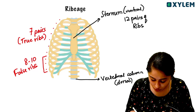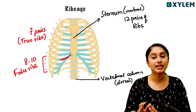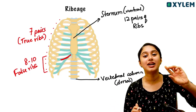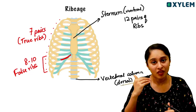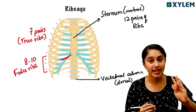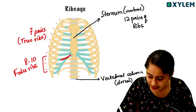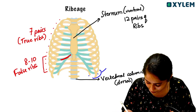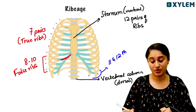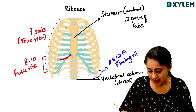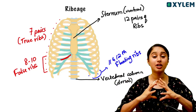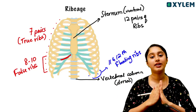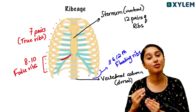The false ribs — the eighth, ninth, and tenth pairs — are attached to the seventh rib, not directly to the sternum. They are attached via the seventh rib to the sternum indirectly. That is why we call the eighth, ninth, and tenth pairs the false ribs. The 11th and 12th pairs are called floating ribs because they are only connected dorsally to the vertebral column, not to the sternum or the previous rib.